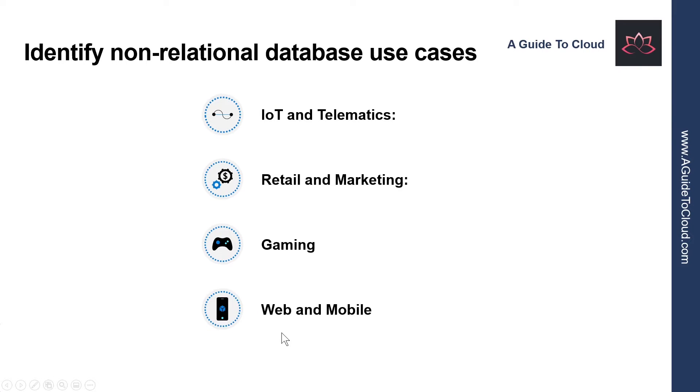Let's look at one more use case scenario. This time it is for web and mobile applications. A non-relational database such as Azure Cosmos DB is commonly used within web and mobile applications and is well suited for modeling social interactions, integrating with third-party services and for building rich personalized experiences. So, the Cosmos DB SDK can be used to build rich iOS and Android applications using the popular Xamarin framework.